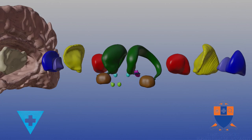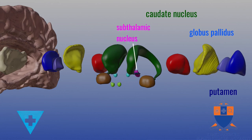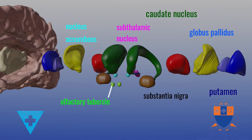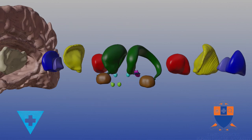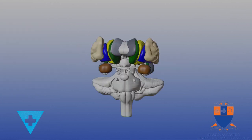The basal ganglia includes the caudate nucleus, putamen, the globus pallidus, the subthalamic nucleus, the substantia nigra, nucleus accumbens, and the olfactory tubercle. They are responsible for controlling motor movements, learning, and memory.